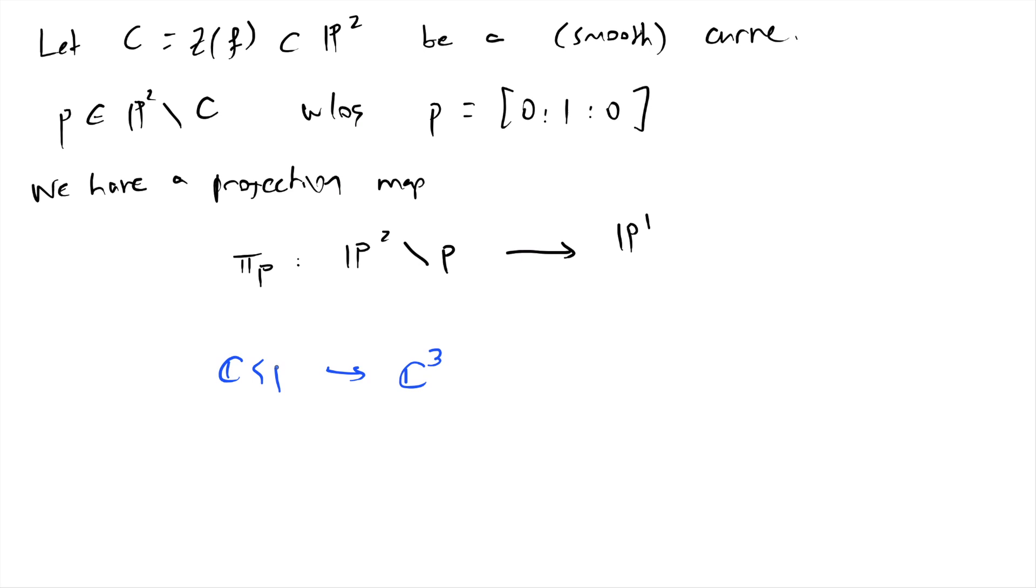If I choose a lift, maybe p tilde inside of c3, then there's a line corresponding to p. I have this inclusion. And then I can form the quotient, which of course is just c2. This c3 gives me p2 and that c2 gives me p1. So the projection map is simply this quotient map from linear algebra after you projectivize.